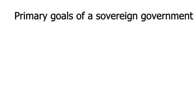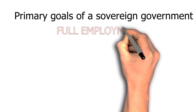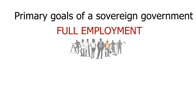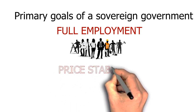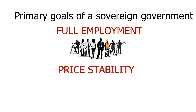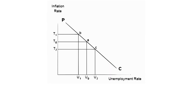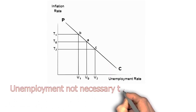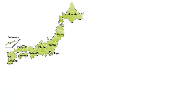Proponents of Modern Monetary Theory assert that the primary policy goals of a sovereign government that can produce its own currency should be full employment and price stability, without which a country cannot operate at its full potential. Modern Monetary Theory also disputes the commonly accepted view that unemployment is necessary to prevent inflation. Japan, for example, has low unemployment and low inflation.